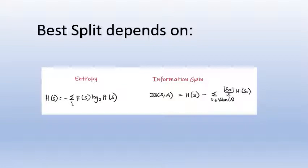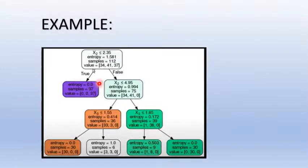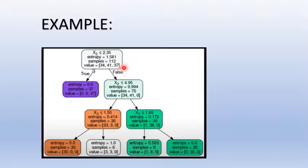If we take the information gain, we will take a common example. We will take three types of classification. We will take samples from the same type and calculate the entropy equation.